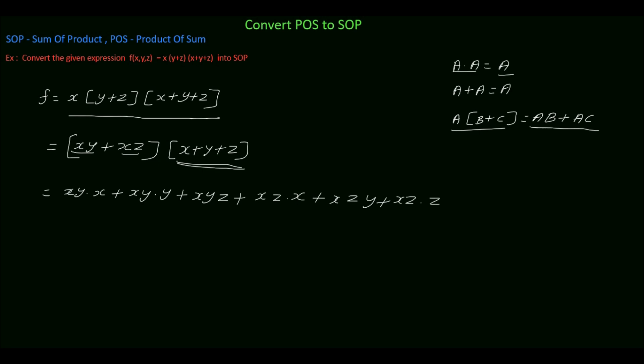A dot a equal to a, so which is equal to x dot x is xy plus x into y dot y is y plus xyz plus x dot x is xz plus xyz plus xz dot z is equal to z. x dot a is equal to x, so multiply xy plus y plus xy dot y is z plus xy plus xyz.